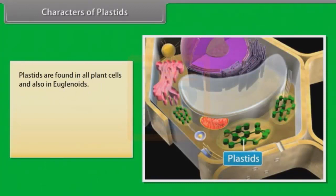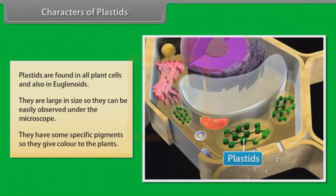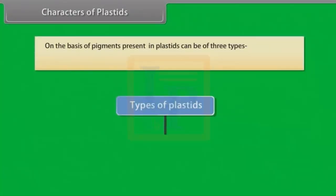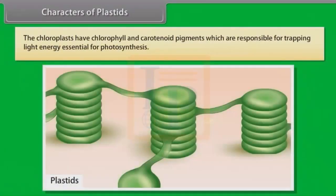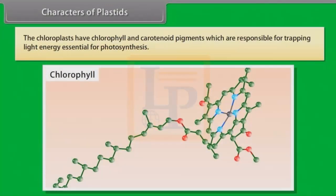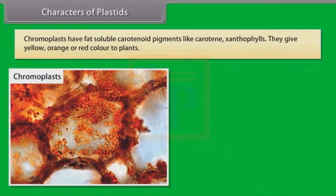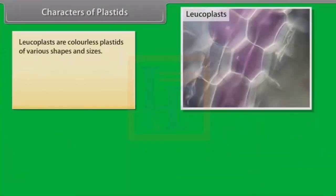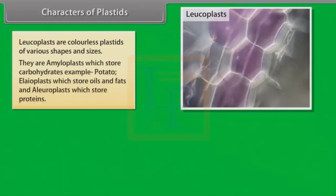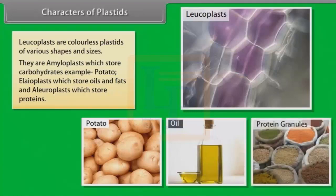Plastids are found in all plant cells and also in euglenoids. They are large in size so they can be easily observed under the microscope. They have specific pigments that give color to the plants. On the basis of pigments present, plastids can be of three types: chloroplasts, chromoplasts and leukoplasts. Chloroplasts have chlorophyll and carotenoid pigments responsible for trapping light energy essential for photosynthesis. Chromoplasts have fat-soluble carotenoid pigments like carotene and xanthophylls, giving yellow, orange or red color to the plants. Leukoplasts are colorless plastids of various shapes and sizes — amyloplasts store carbohydrates (e.g., potato), elioplasts store oils and fats, and aleuroplasts store protein.